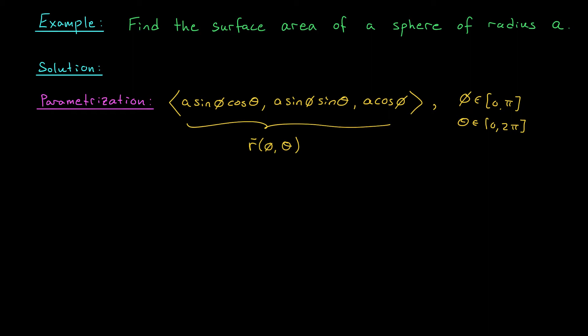Now to find our surface area, we're going to need to compute a double integral. The double integral of the norm of r sub phi cross r sub theta dA. Phi and theta are our parameters. So they're playing the roles of u and v. We need to compute r sub phi and r sub theta first. So r sub phi we get by differentiating this expression with respect to phi. That's going to give us a cos phi cos theta, a cos phi sine theta, and minus a sine phi.